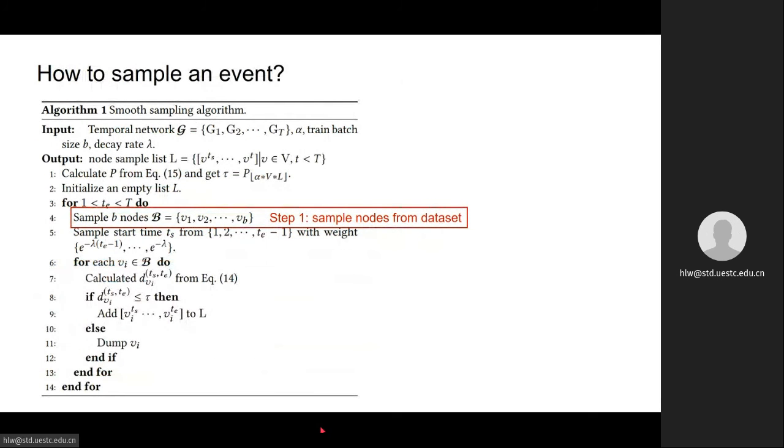We propose a smooth sampling algorithm to sample events for model training. For example, in order to perform link prediction at time t_e plus one, there are three steps to sample events.